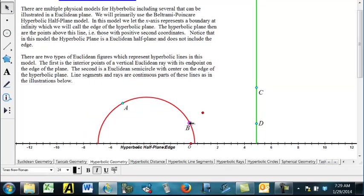And then we also have lines going through two points like this, are actually Euclidean semicircles with the center on the edge. And so they'll also be perpendicular here to the edge there and there as well.